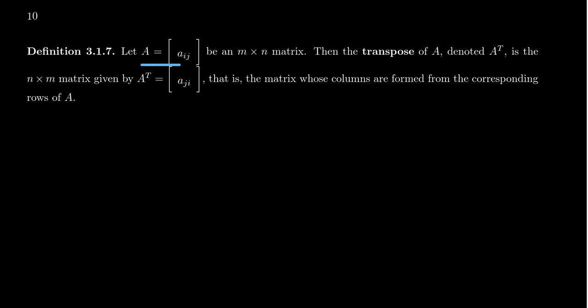Imagine we have a matrix given by the formula A equals the matrix whose i-th j position is A_ij. The transpose of A, which we'll denote A to the superscript T — so if A is an M by N matrix, the transpose is going to be an N by M matrix. Notice how that's swapped around. The entries of A transpose are going to be A_ji. You'll notice that we swap the indices around, and this is what the transpose does.